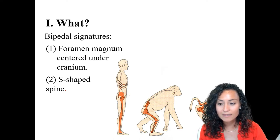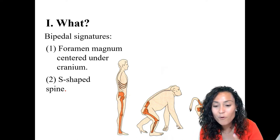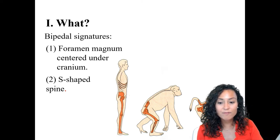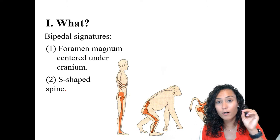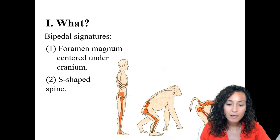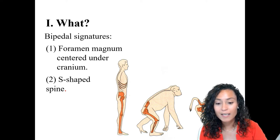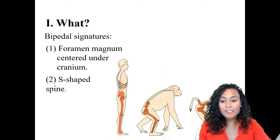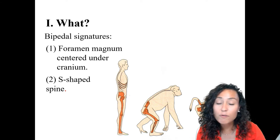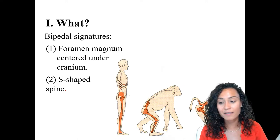So it helps keep us balanced. Humans actually have one more lumbar vertebra than apes do, and these vertebrae are also larger than our ape cousins. The larger size and number of vertebrae in modern humans creates a more flexible lower back that allows the back to swivel forward when walking, again helping us maintain our balance.